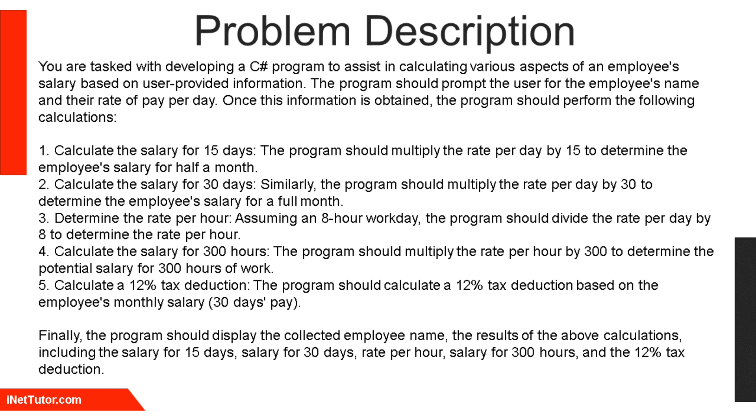4. Calculate the salary for 300 hours. The program should multiply the rate per hour by 300 to determine the potential salary for 300 hours of work. 5. Calculate a 12% tax deduction. The program should calculate a 12% tax deduction based on the employee's monthly salary, 30 days pay. Finally, the program should display the collected employee name, the results of the above calculations, including the salary for 15 days, salary for 30 days, rate per hour, salary for 300 hours, and the 12% tax deduction.